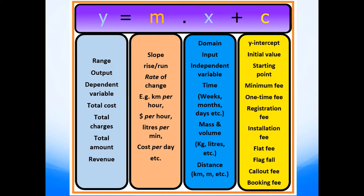We need two pieces of information from the word problem: the gradient value and the y-intercept. The gradient — slope — is given by rise over run. It determines the rate of change, and the keyword for rate of change is 'per', for example kilometers per hour, dollars per hour, liters per hour, etc.